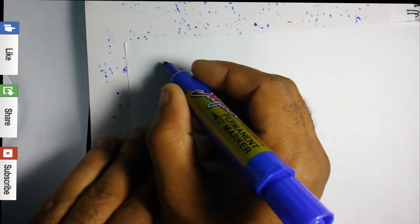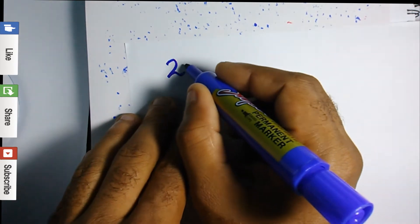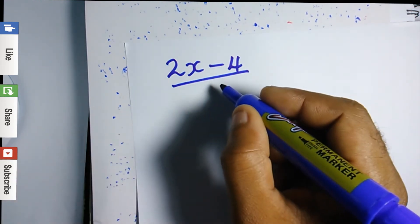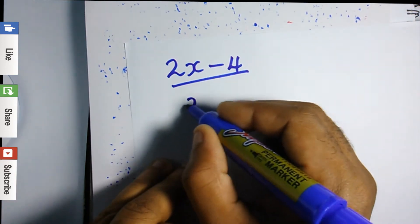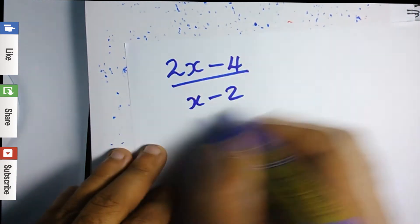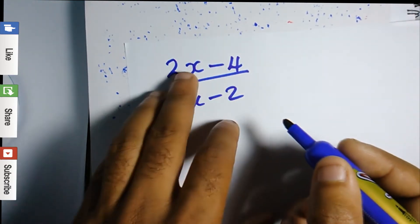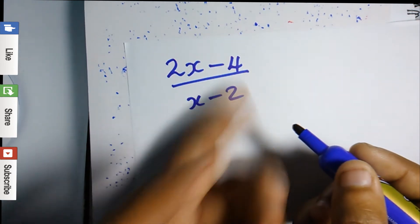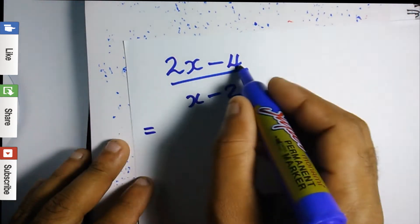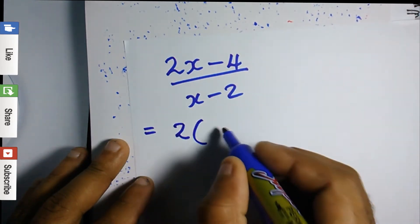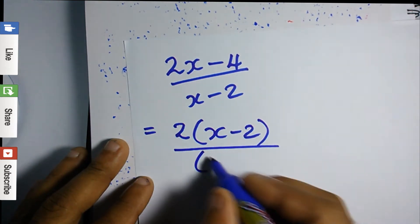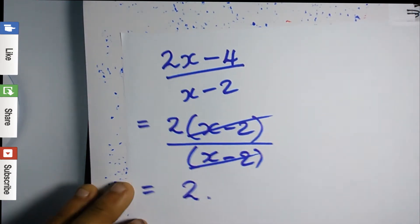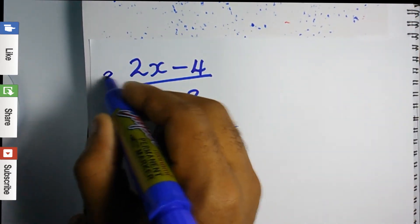For question three, let's say we have 2x minus 4 divided by x minus 2. The top section uses factorization by the distributive law — two is common, so it becomes 2 open bracket x minus 2. The bottom is just x minus 2. We can cancel x minus 2 with x minus 2, so our result is just 2.